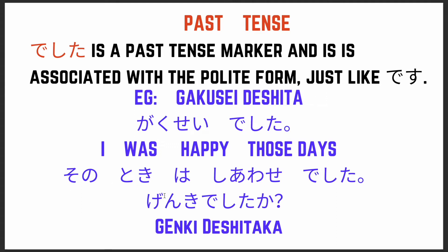The next example: 'sono toki wa shiawase deshita' — 'sono toki' means 'those days,' and 'shiawase' is an adjective meaning happiness, so it means 'I was happy those days.' You can also change it to a question by just adding the suffix 'ka': 'genki deshita ka' — 'Were you doing well?'